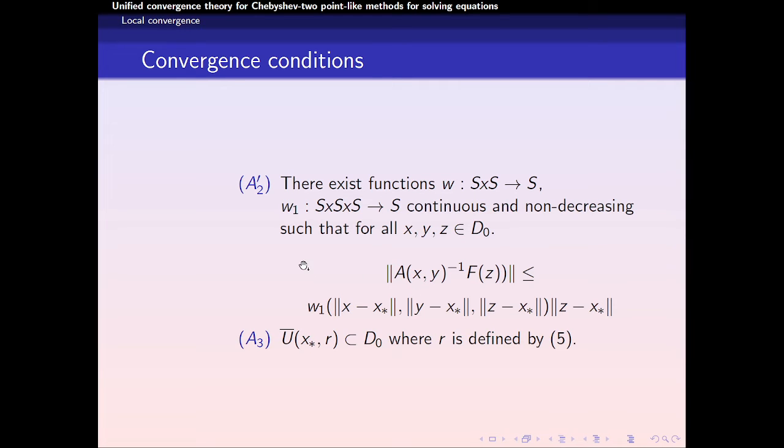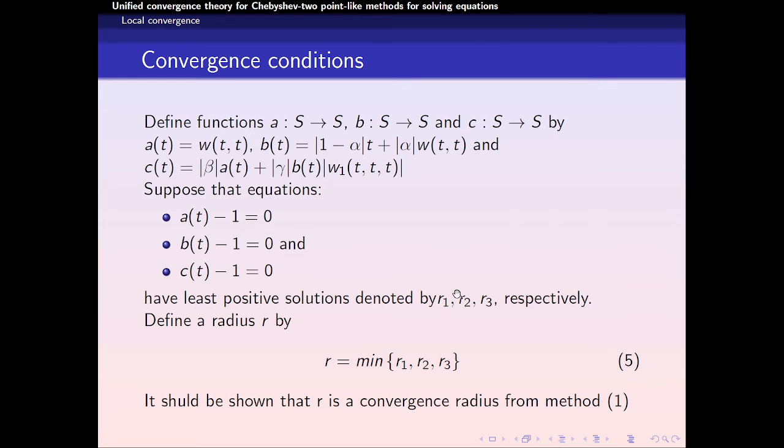And the final convergent condition A3 is that the closed ball U with center x* of radius R is a subset of D₀, where R is defined by equation 5. Equation 5 says that R is equal to minimum of 3 radii, which is equal to 0.